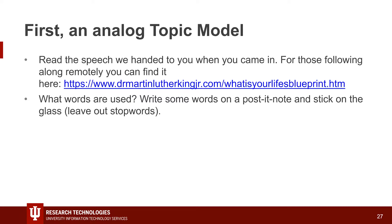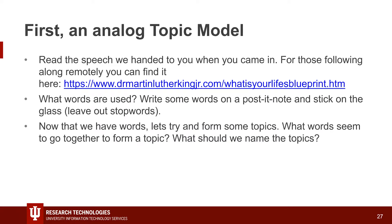So we've got our words. Now everybody come back up and look at the words we have. What we're going to do is form some topics — what words seem to go together to form a topic? One of the things you usually do when you first do a topic model is actually set the number of topics you want. So you go in and say, we're going to aim for 20 topics, and then the algorithm goes through the words and tries to make 20 topics out of everything. We're going to try and do the same thing. How many topics should we have?